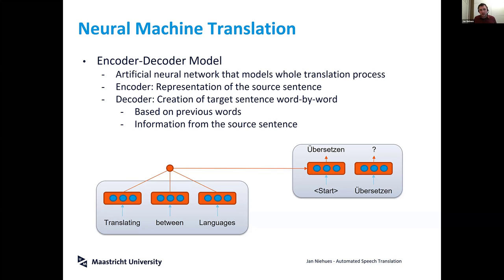It might sound a little abstract, but what it really does is represent words as large vectors — large numbers — which try to infer some meaning from the words. For example, they try to ensure that words with similar meanings are also close to each other in that vector space.